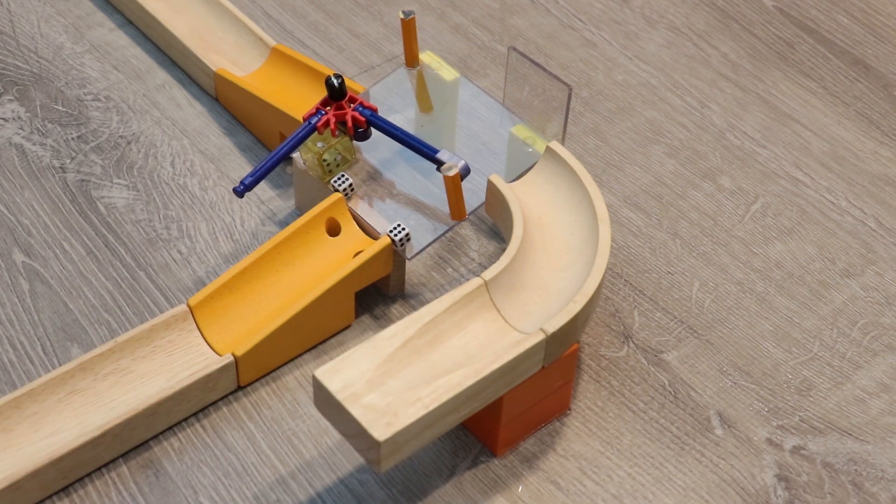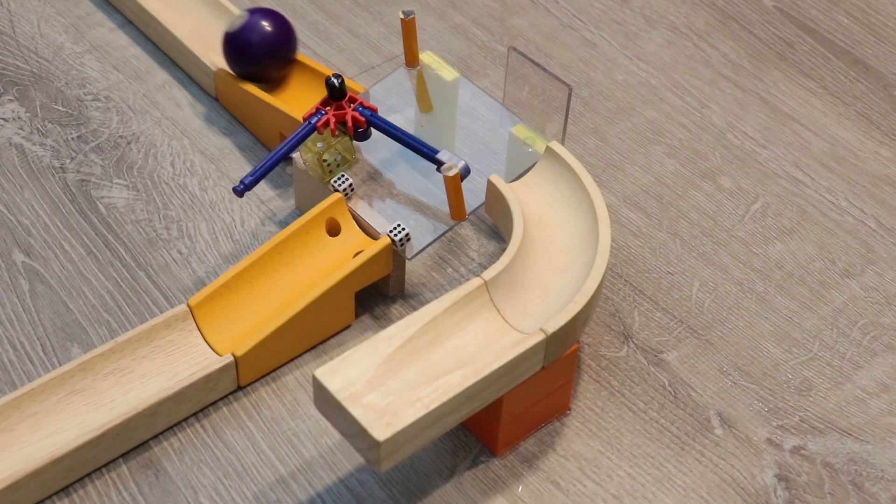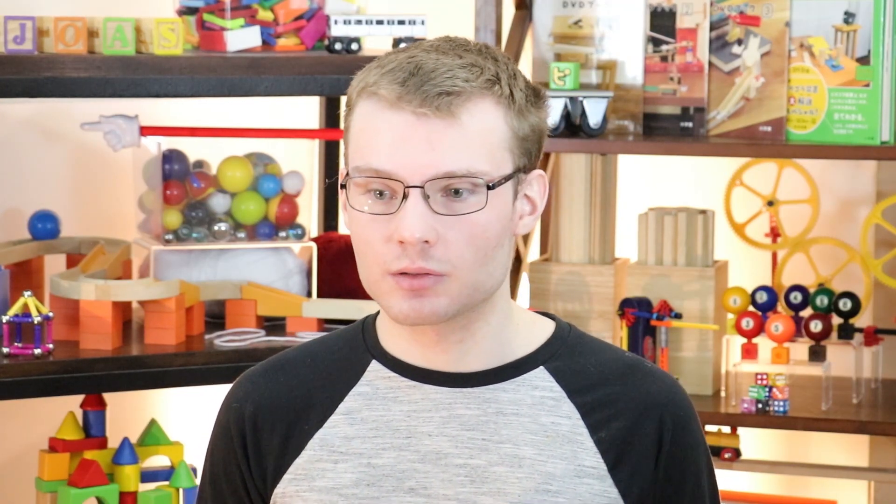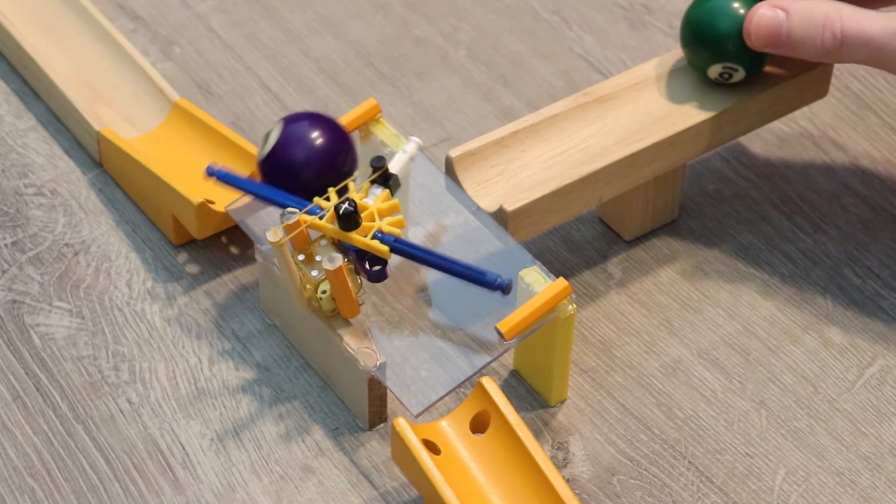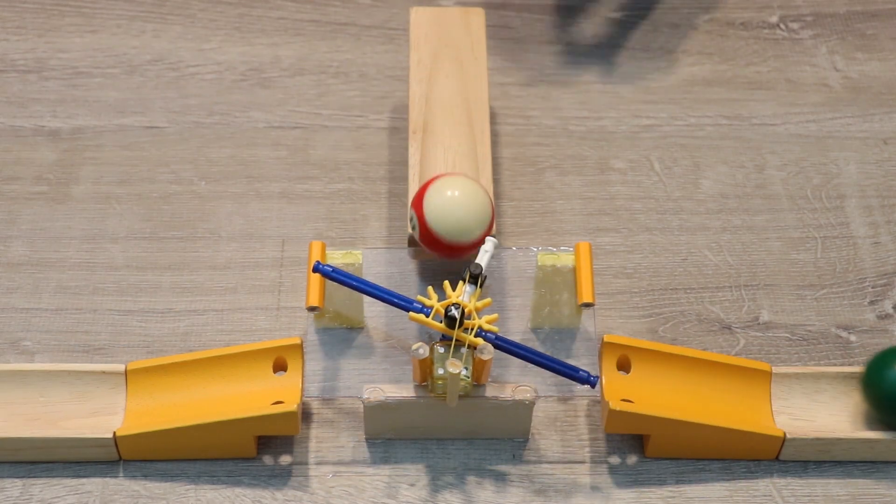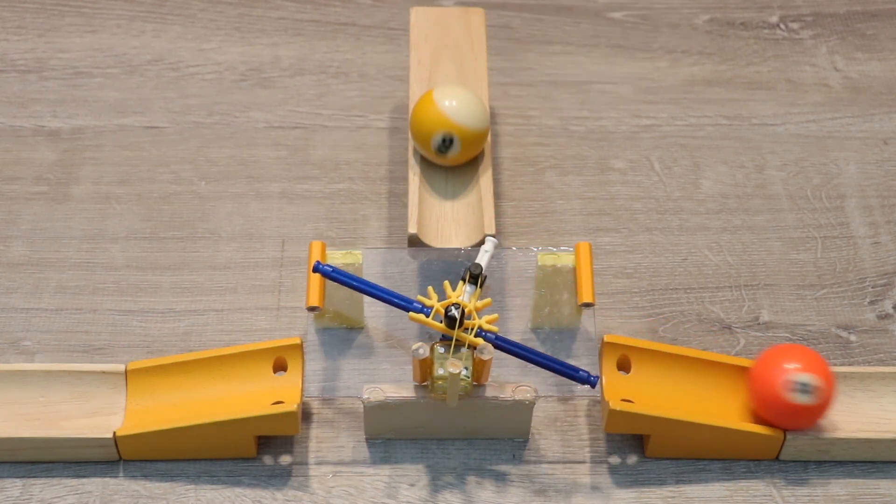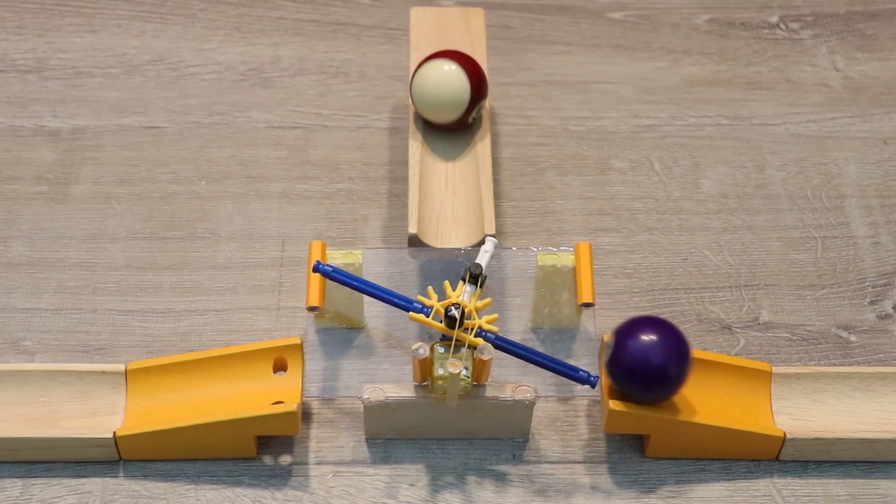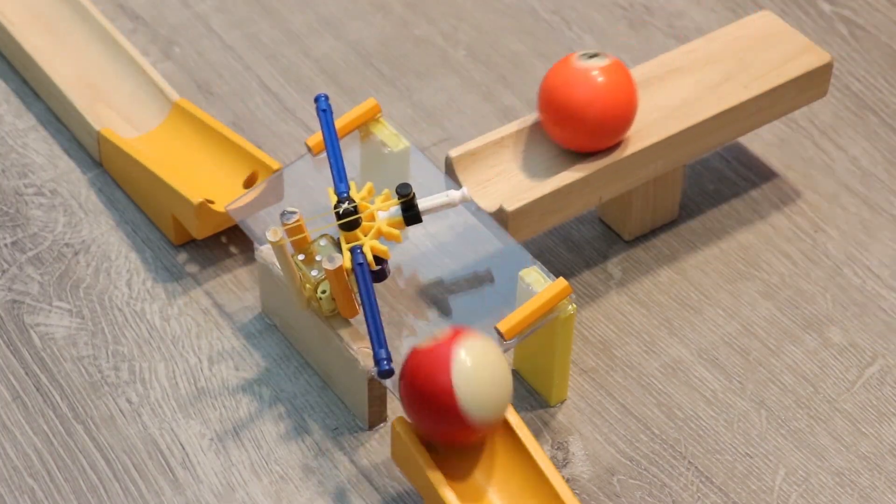This is an example of a path splitter with a definitive endpoint. Like, if I were to put a third ball through, it wouldn't do anything different. It would just do the same thing that the second ball did. But you can also make a path splitter that toggles indefinitely. And here's an example of what that looks like. You can see that every ball just pushes the lever to the other side, effectively creating an infinite loop that toggles between directing balls to the left and to the right.